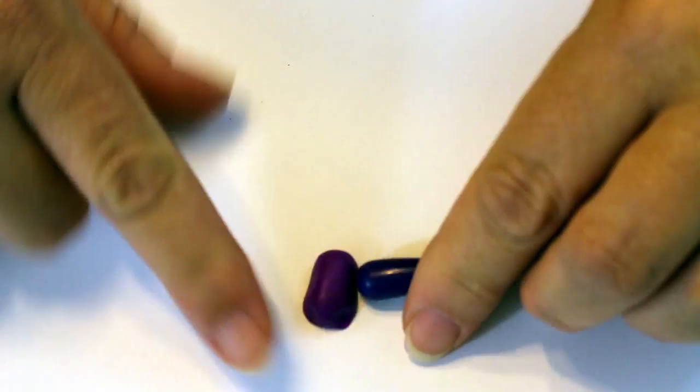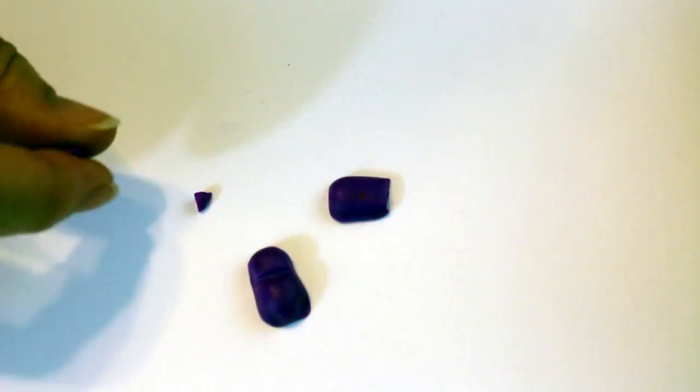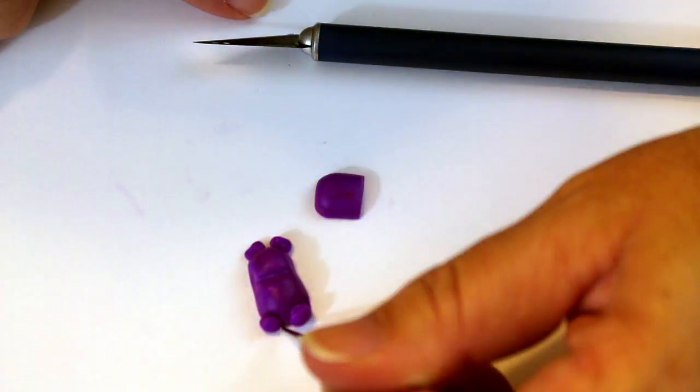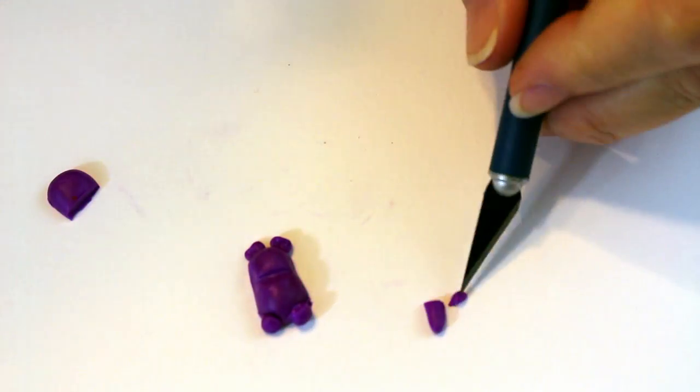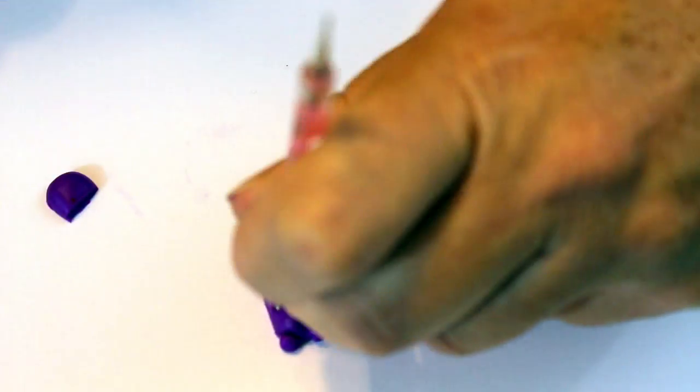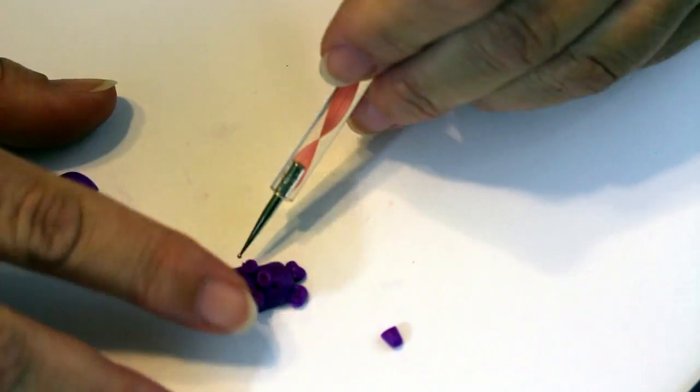Using purple clay, form the gummy bear body shape. Add ears and legs. Create the face and add arms. Repeat this process with the green clay. Bake according to package instructions.